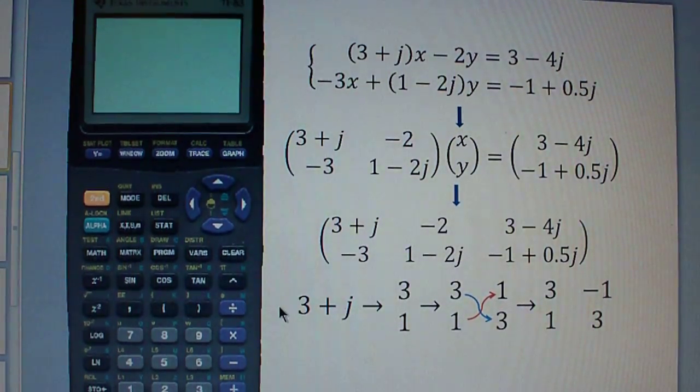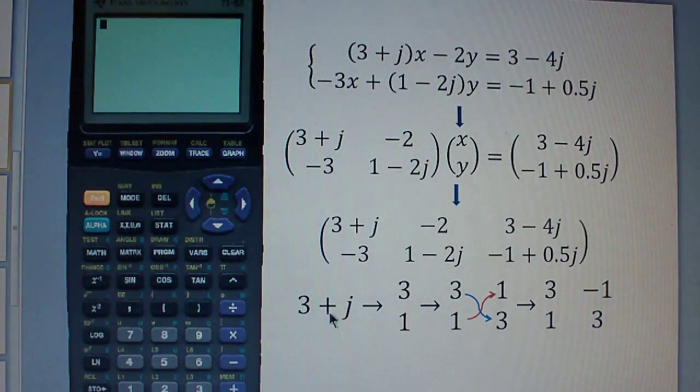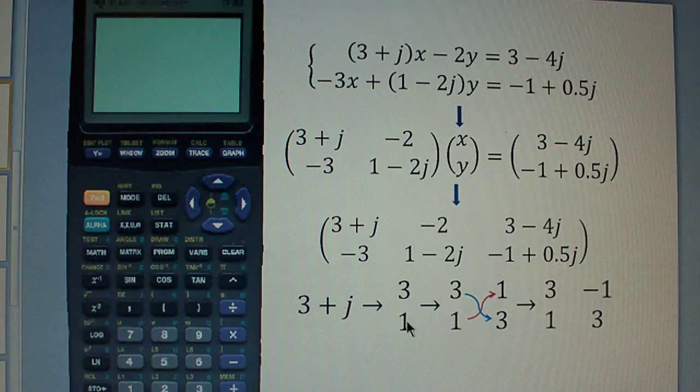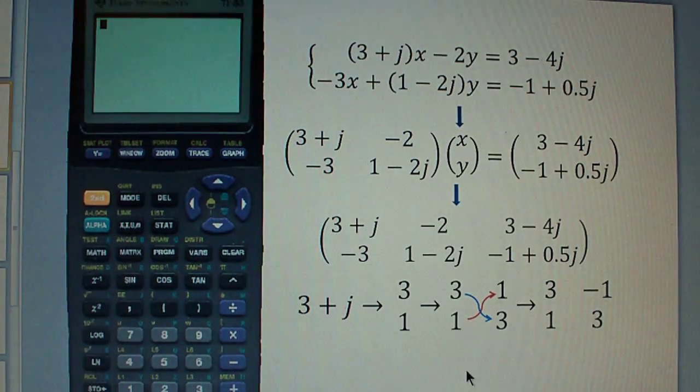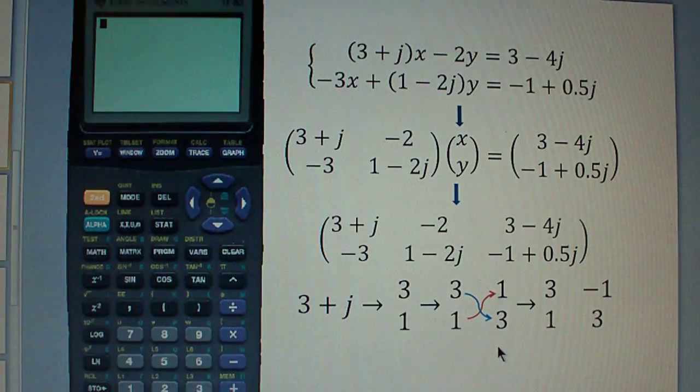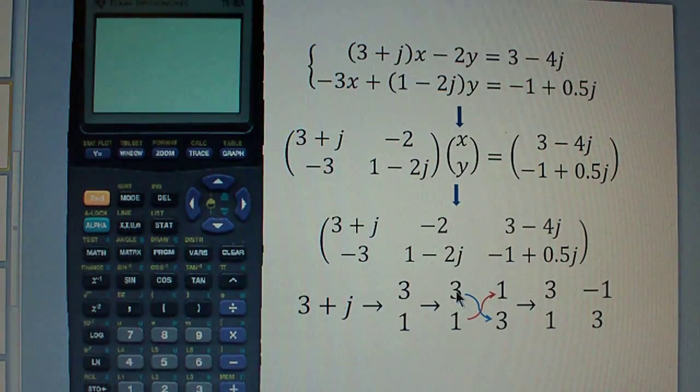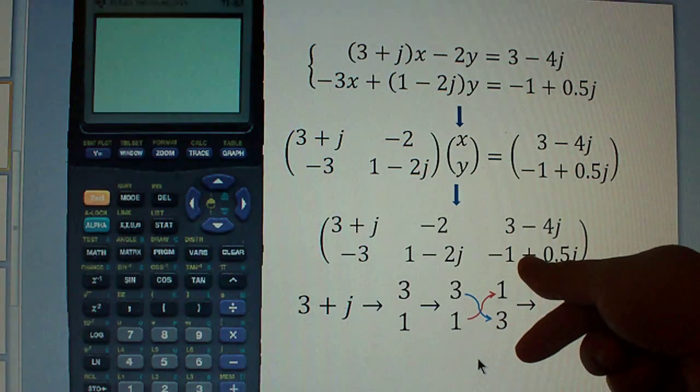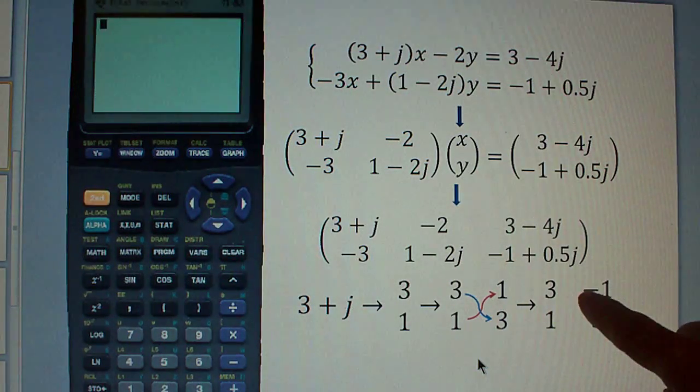How do you do that? Well, first think about this 3 plus j as 3 plus 1j, and put those two numbers, 3 and 1, as a column vector. So you have 3 and 1 up and down, and then you have to put another column right next to it, and the way you do it is you flip these two numbers, 3 and 1 gets flipped into 1, 3, and then you have to negate the top one.